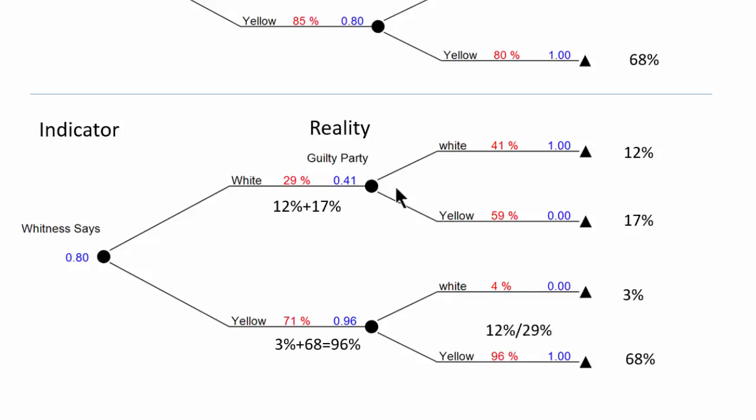Having those numbers we can then back calculate these other two branches. So we know that this branch here times this branch is equal to 12. So that means that this branch must be 12 divided by the 29. And similarly for the other three branches.